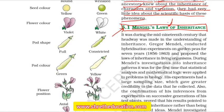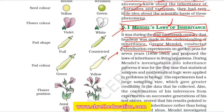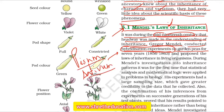It was during the mid-19th century that headway was made in the understanding of inheritance. Gregor Mendel conducted hybridization experiments on garden pea. In 1856 to 1863, he proposed the laws of inheritance in living organisms.